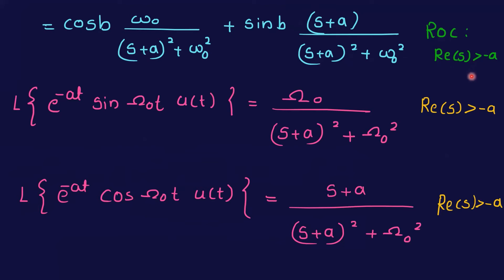The Laplace transform of e^(-at)sin(ω₀t)u(t) = ω₀/[(s+a)² + ω₀²], and of e^(-at)cos(ω₀t)u(t) = (s+a)/[(s+a)² + ω₀²]. Therefore X(s) = cosb · ω₀/[(s+a)² + ω₀²] + sinb · (s+a)/[(s+a)² + ω₀²], with ROC: Re(s) > -a.